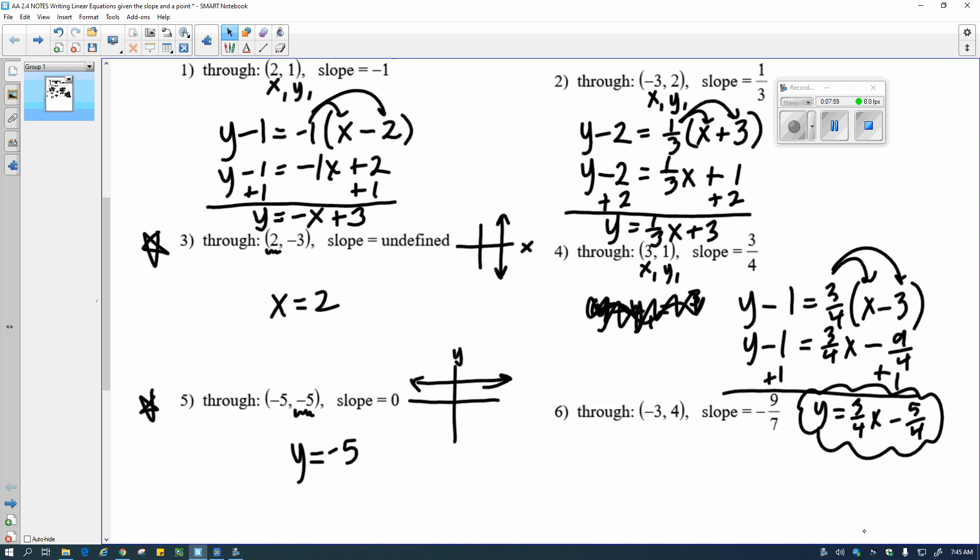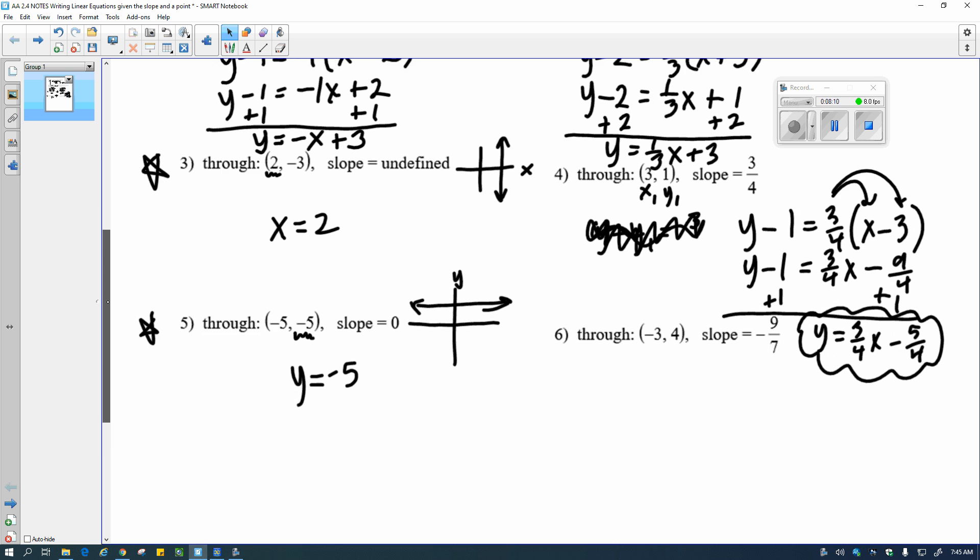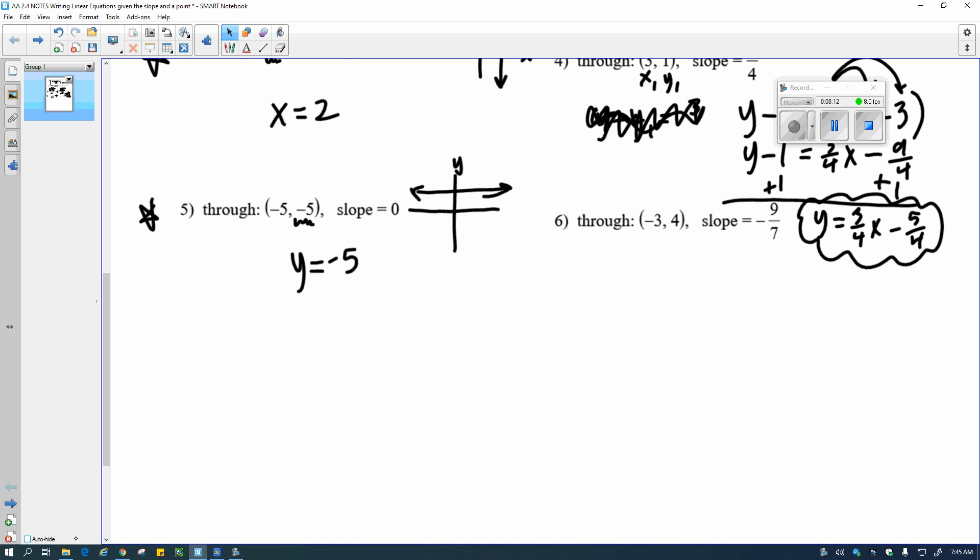Again, my whole point is to get it into y equals form. If I have a zero slope or an undefined slope, my job is super easy. But if I have the points and the slopes there, I'm going to have to work through it with my point slope form. Our last one is here.